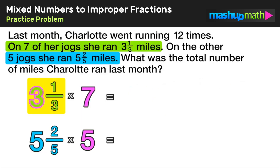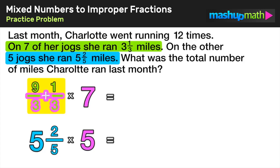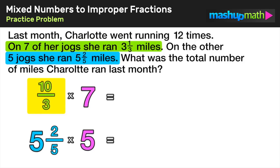So I can express three as nine over three — nine divided by three equals three. Now I can add these two fractions together since they have a common denominator: nine over three plus one over three equals ten over three. What we just did was take the mixed number three and one-third and convert it into the equivalent improper fraction ten over three.